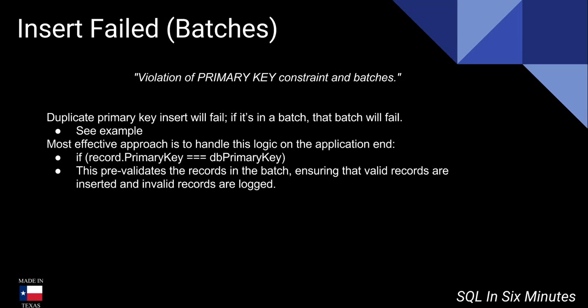In your application logic, you can also check if the primary key exists and handle it. Basically what you're doing there is pre-validating the records in the batch to ensure that valid records are inserted and that invalid records are logged. You can also change the type of primary key so there's no possible way you could ever have a duplicate value, though that will probably require some overhead. This is something to note: if I insert 100 records and one of those records has a violation of a primary key constraint, those 100 records aren't going to end up there. I have to think at the application level about how to approach building something so that if the insert fails on one particular record, I still get the other ones that are unique.